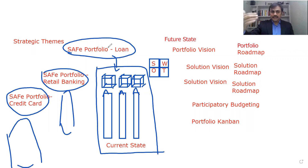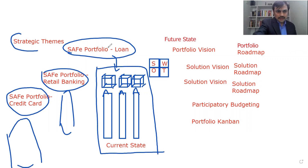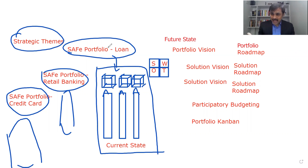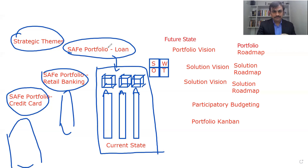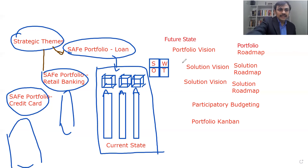Now, periodically, organizations go through their strategic review process which generates future direction, and we are using the term Strategic Theme for it. Maybe annually or every six months, organizations look at their business and think about what they want to do in order to achieve their strategic objectives — based on the competition, market opportunities, the mission the organization is working on, their current strengths, weaknesses, and whatever factors they want to consider. They come up with a strategic direction, and in SAFe we call that a Strategic Theme. These directions are then communicated to the various SAFe portfolios.